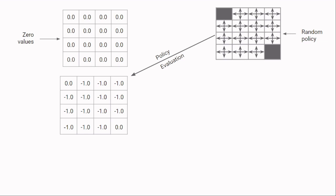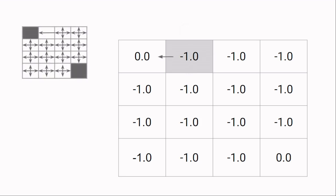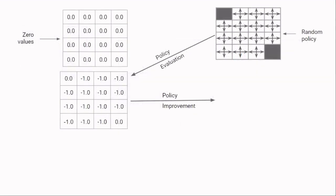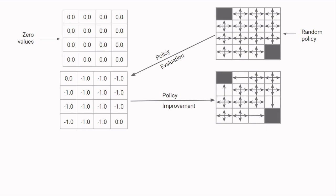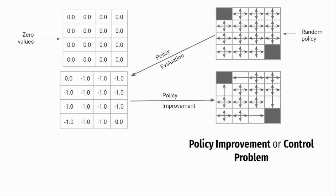Now we can take a greedy step to improve our policy using these values. For cell 1, only the left action leads to a next state with a value of 0, which is an increase from the current minus 1. For all other actions, the values remain constant. Since the left action gives more value, we improve our policy at this state to take a left action only. Similarly for cell 4, the up action results in an increase in values, so the policy is improved to take an up action there. These improvement steps are applied to all states, resulting in a new improved policy. This step is called policy improvement or the control problem.